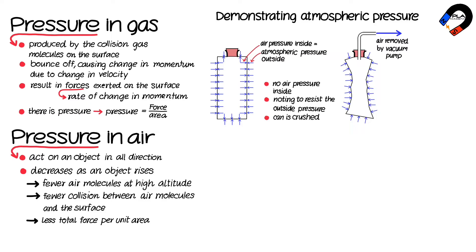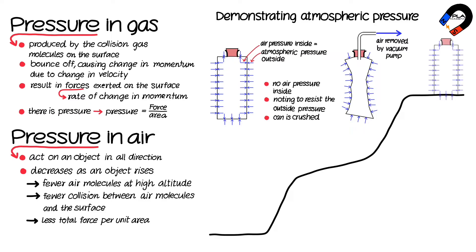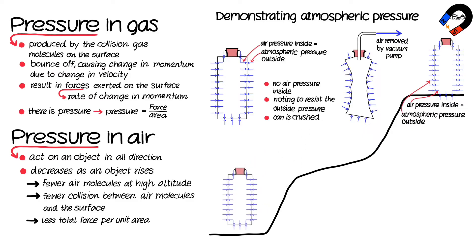The can is therefore crushed. If the same can is sealed at the top of a mountain, there is air pressure inside pushing outward, equal to the atmospheric pressure outside the can. When it is moved to the bottom of the mountain,